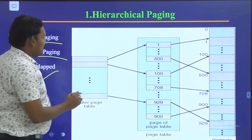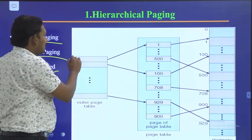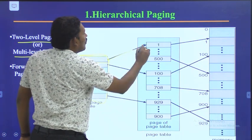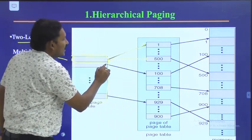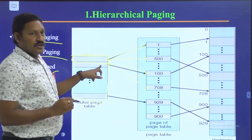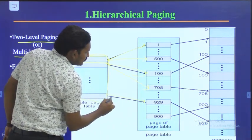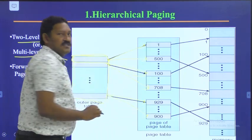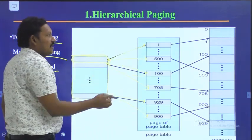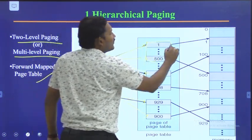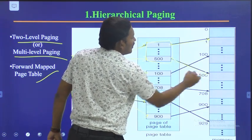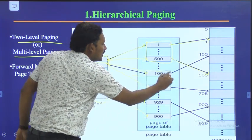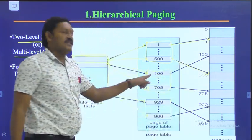In hierarchical paging, we will have an outer page table. The outer page table consists of information regarding records 1 to 50 in one entry, 100 to 708 in another, and 929 to 900 in another. This outer page table contains information regarding the inner page table. The inner page table then stores the information about where those records — say 1 to 500 — are located in physical memory.